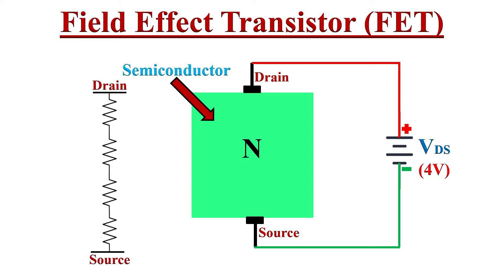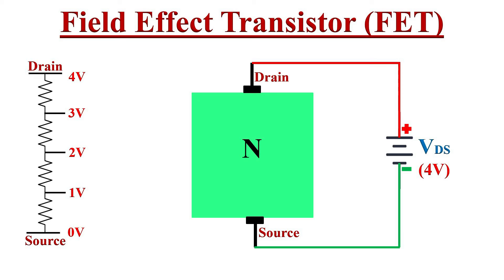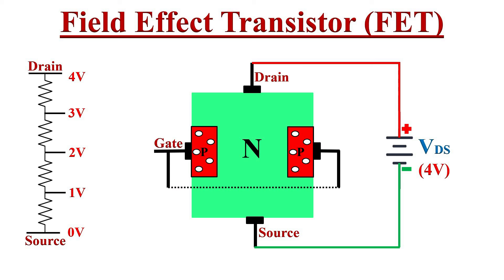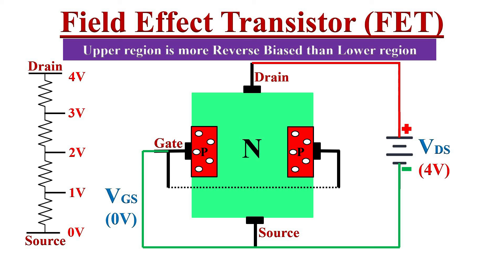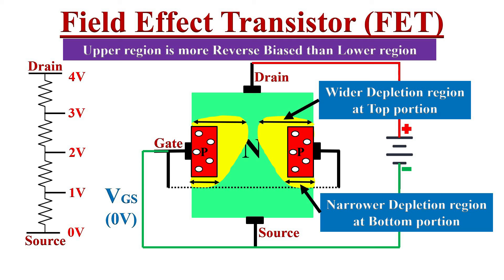The N-channel can be represented as a series of distributed resistors between the drain and source terminals. With 4 volts VDS applied, the voltage drop at drain equals 4 volts, and as we move towards the source terminal there will be a decreasing voltage drop at each resistor. When the gate and source terminals are connected together, VGS equals zero. Because of the reducing positive voltage from drain to source, the upper or drain region is more reverse biased than the lower region, so the depletion region is wider at the top and narrower at the bottom.